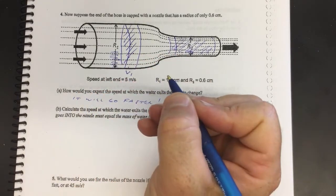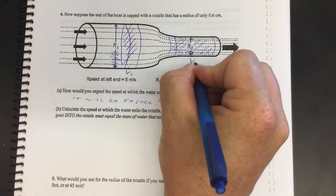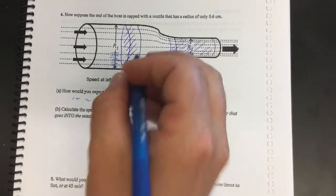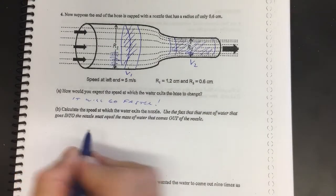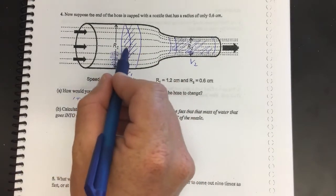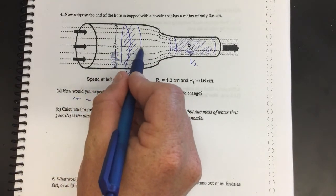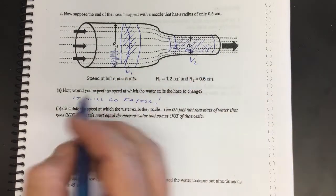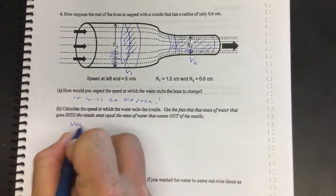What you can do is you can think about it - well, if a certain volume of water flows by in one second here, that same volume needs to flow by over here. So what you can do is you can say volume per time on the left equals the volume per time on the right.